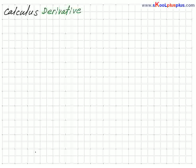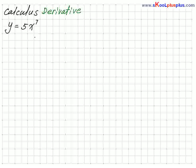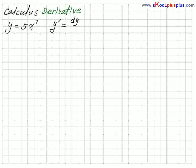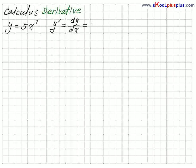Let me give you one sample right here. y equals 5x to the 7th power. What is the derivative? Let's do differentiation: y prime, which is dy/dx. You just move this power to the front, so 5 times 7 is 35, then x to the 7 minus 1, which is the 6th power. That's it — very simple.